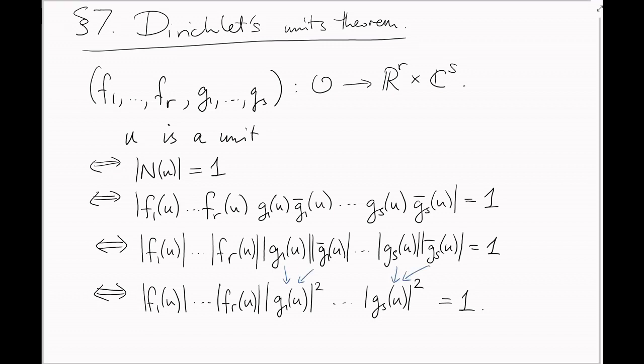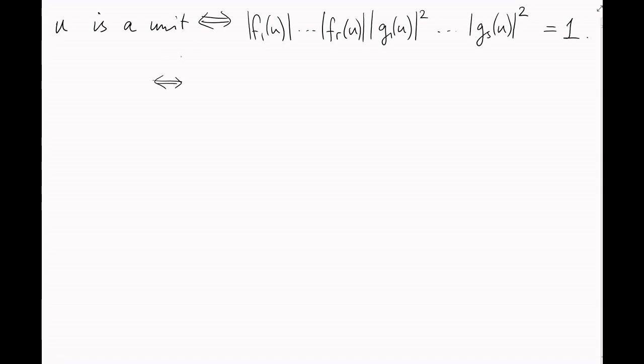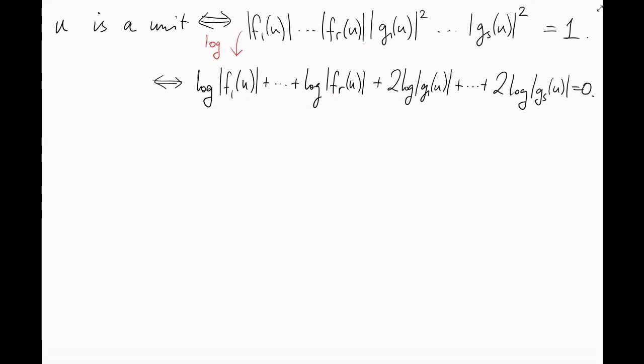This is now a product of a bunch of R plus S positive real numbers. Now, as before, let's take the logarithm of both sides of this equation so that the product turns into a sum. I get a sum of a bunch of numbers. Let's call them L1, L2 up to L R plus S equals 0.